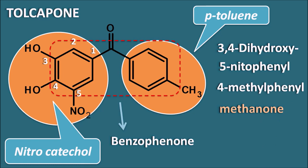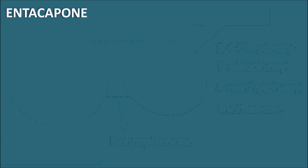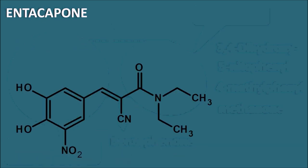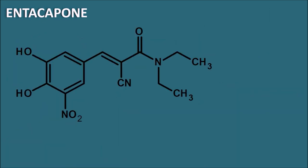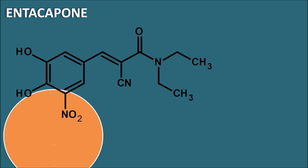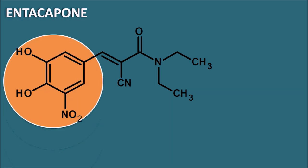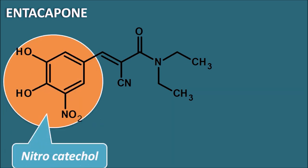Tolcapone is a nitrocatechol with a tolyl moiety, and chemically it is a benzophenone derivative. Now let us go with entacapone. Entacapone has a similar ring system — it is also having the nitrocatechol moiety.